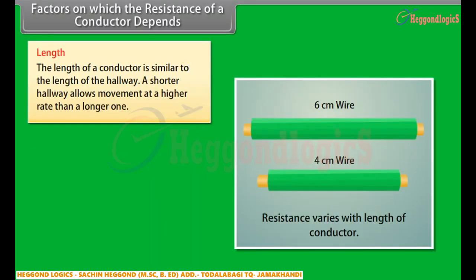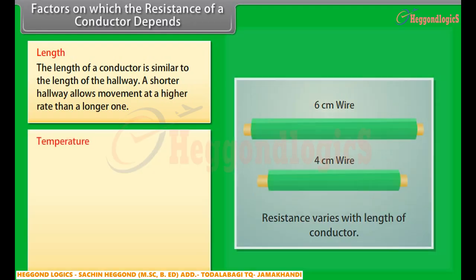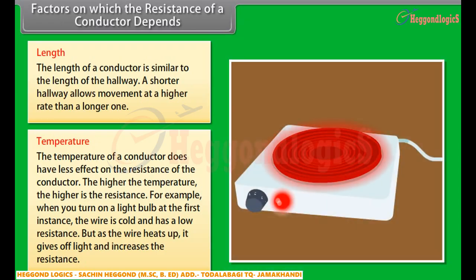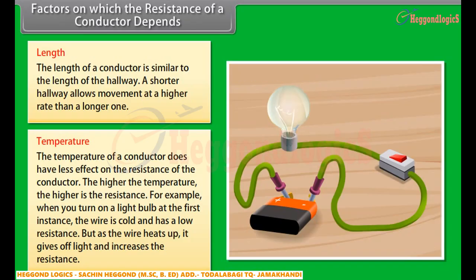Length: the length of a conductor is similar to the length of a hallway. A shorter hallway allows movement at a higher rate than a longer one. Temperature: the temperature of a conductor has a significant effect on resistance. The higher the temperature, the higher the resistance. For example, when you turn on a light bulb, the wire is initially cold and has a low resistance. But as the wire heats up, it gives off light and the resistance increases.